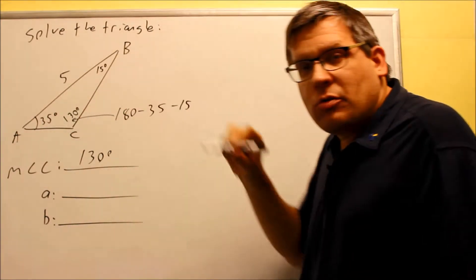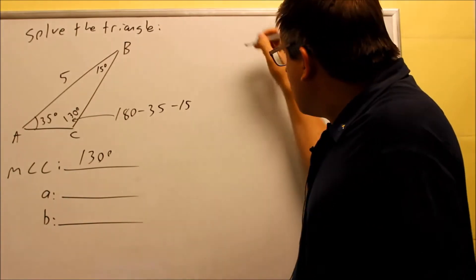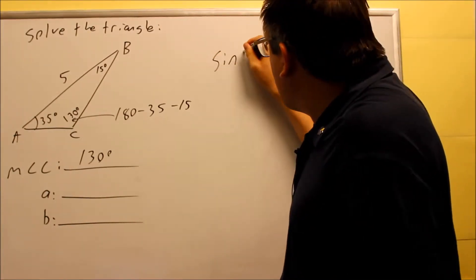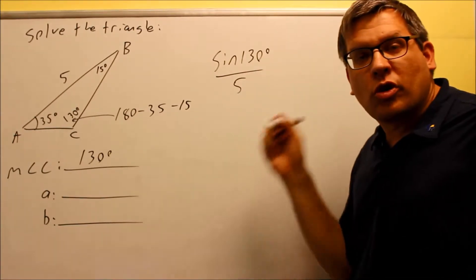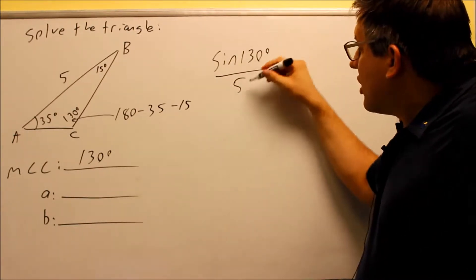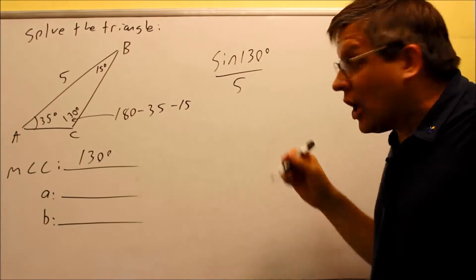Now that we have this, it's important because we can set up our given ratio. We're going to do sine 130 over 5. You always want to begin with a side opposite the given angle. We have it.